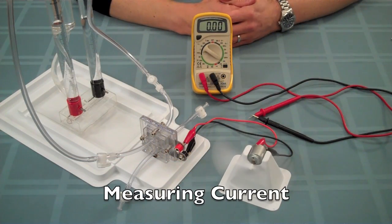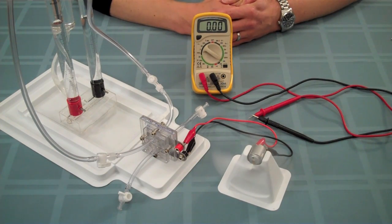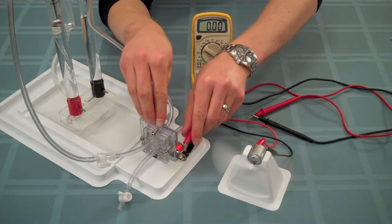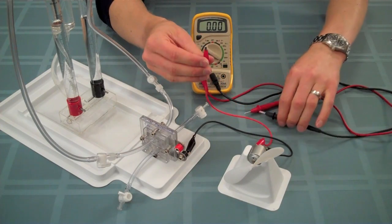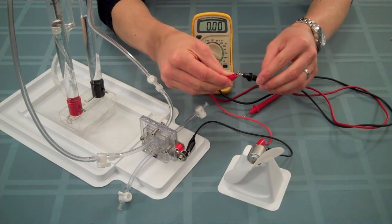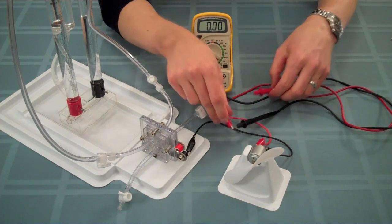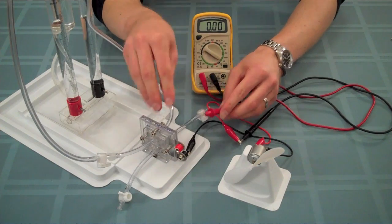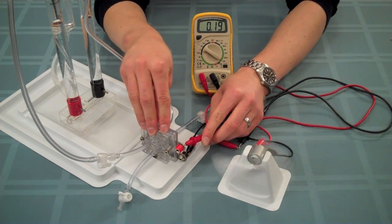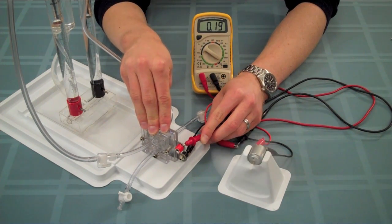Measuring the current produced by the fuel cell is different than measuring the voltage across the fuel cell. To measure current, disconnect the red alligator clip from the fuel cell and connect it to the black probe on your multimeter. Then, connect the red probe on your multimeter to the red terminal on the fuel cell. You're now measuring current.